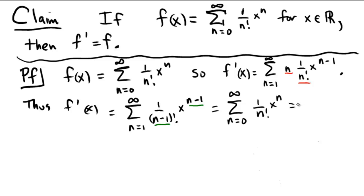But remember what that is. From the very beginning, we had that f of x equals that exact same thing as we have right here. Therefore, we have that f prime of x is equal to f of x, and that completes the proof.